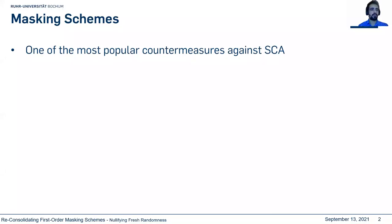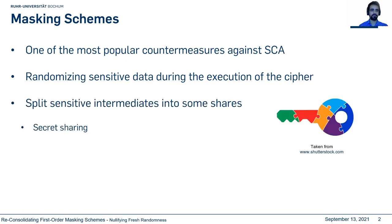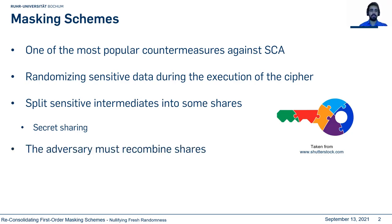Masking schemes are one of the most popular countermeasures against side-channel analysis, based on randomizing sensitive data during the execution of a cipher. In a masking scheme, we usually divide the sensitive variable into some shares, which forces the adversary to recombine the shares to recover the key.